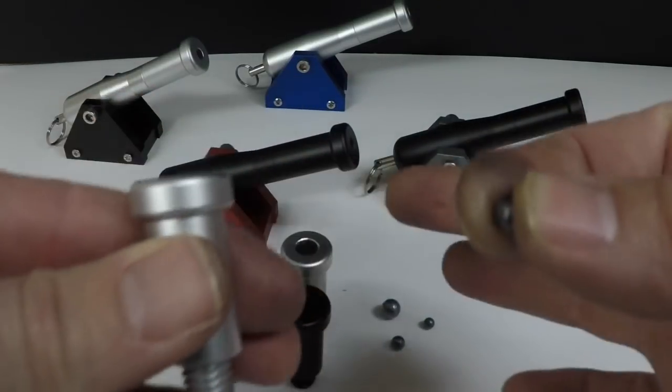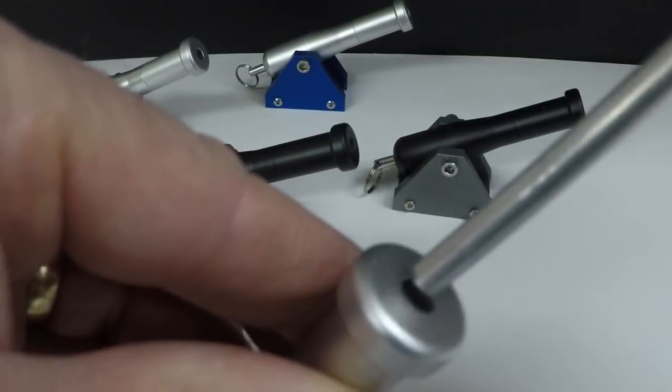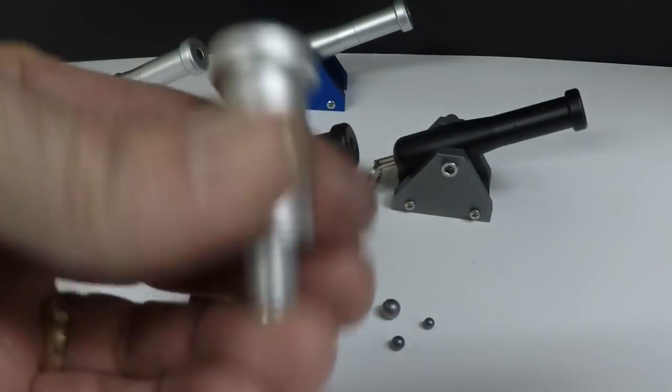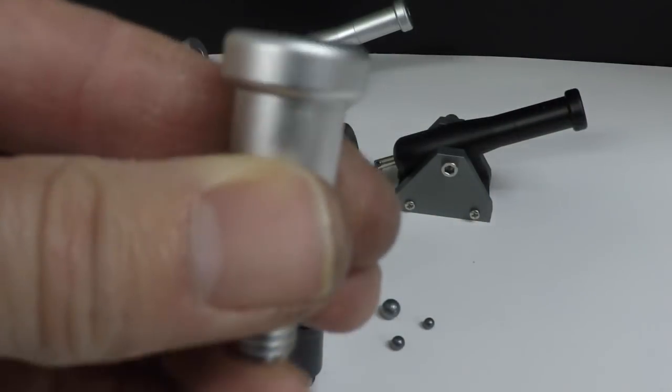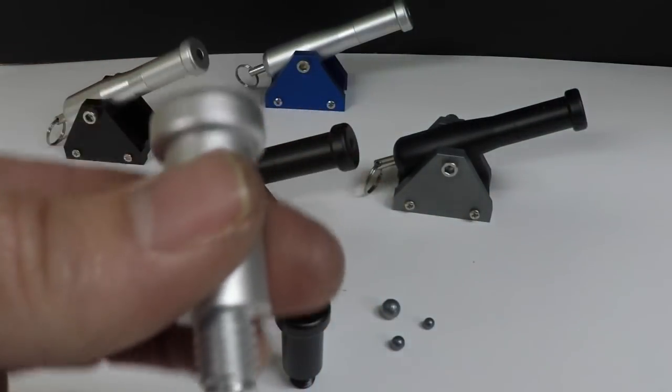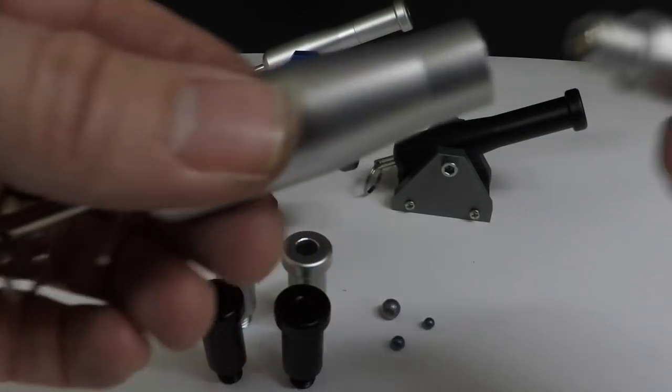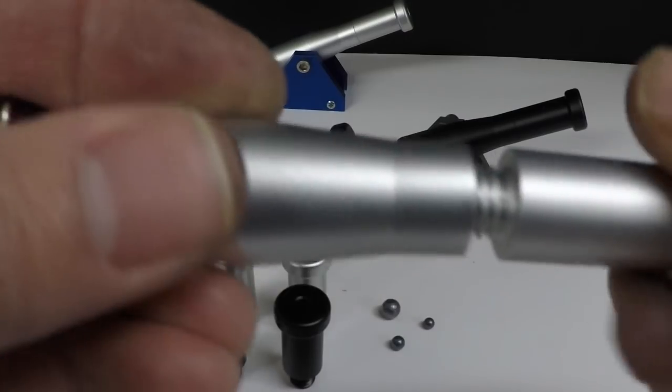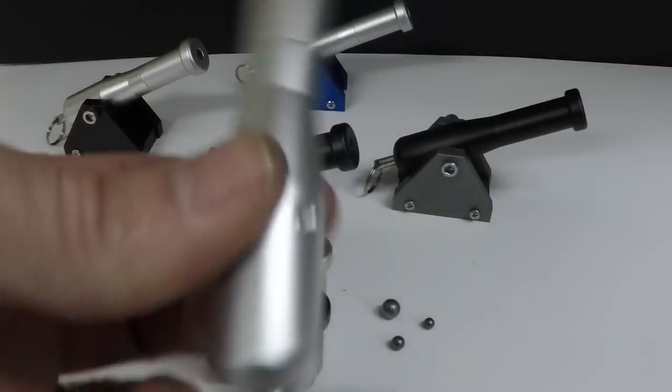Then you take your 22 lead ball and drop it right in the front. And you may need to use your ram rod. Just keep your finger on the back side of it and just kind of gently push it and make sure it's good and solid down towards the back side of the barrel end. Then you'll take your barrel and you'll just screw it right on the end of it like so. And you are ready to go.